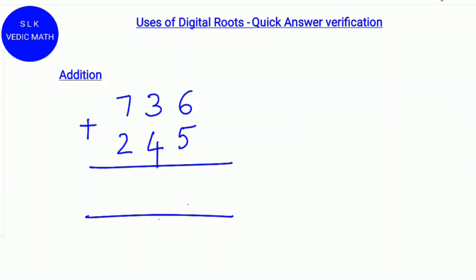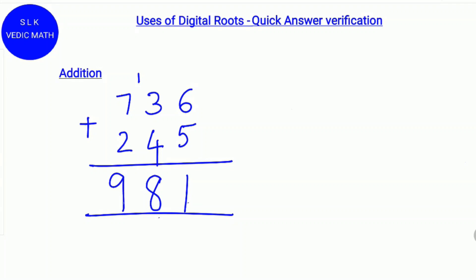Let's try an example: 736 plus 245. 6 plus 5 is 11, write 1 carry 1. 1 plus 3 is 4, 4 plus 4 is 8. 7 plus 2 is 9. So the answer is 981.